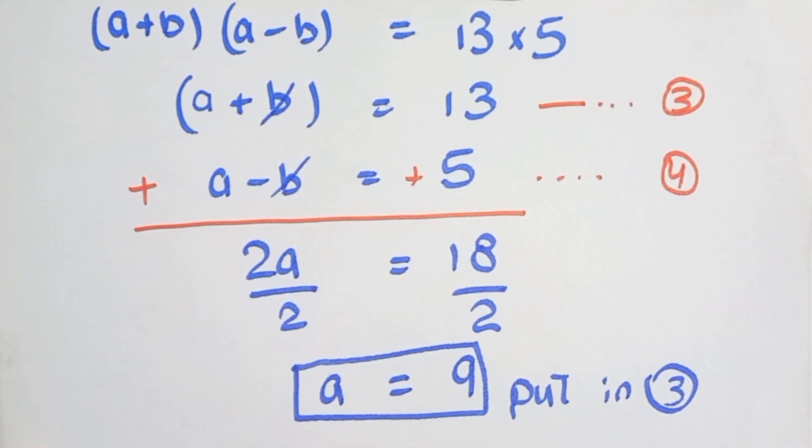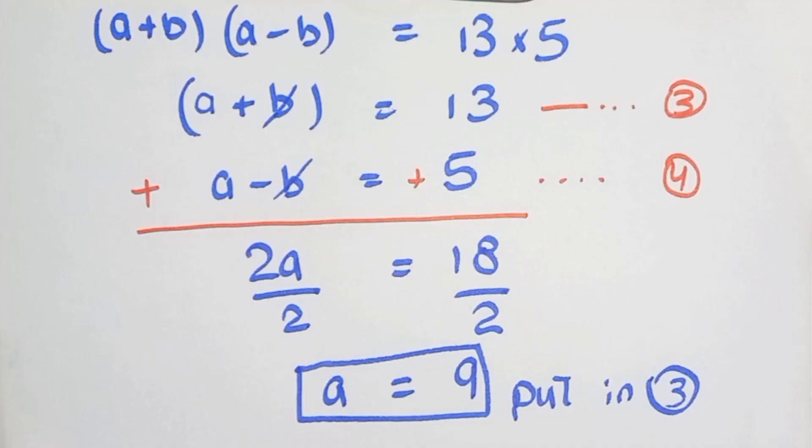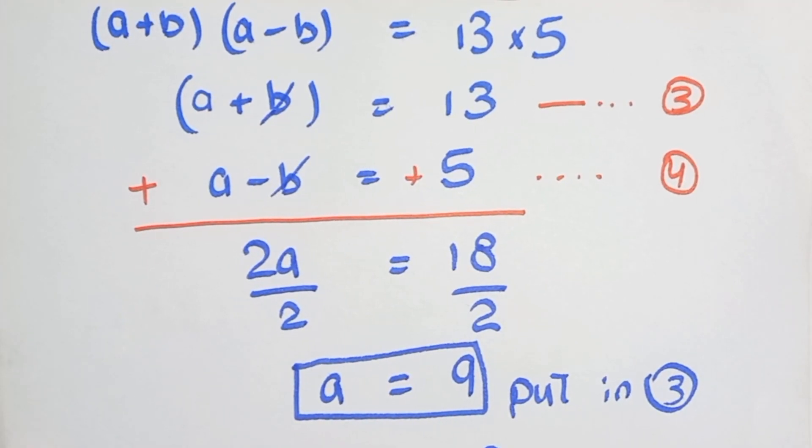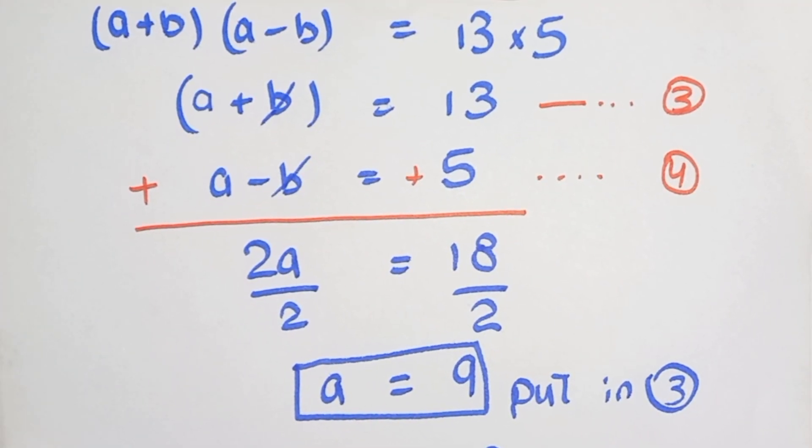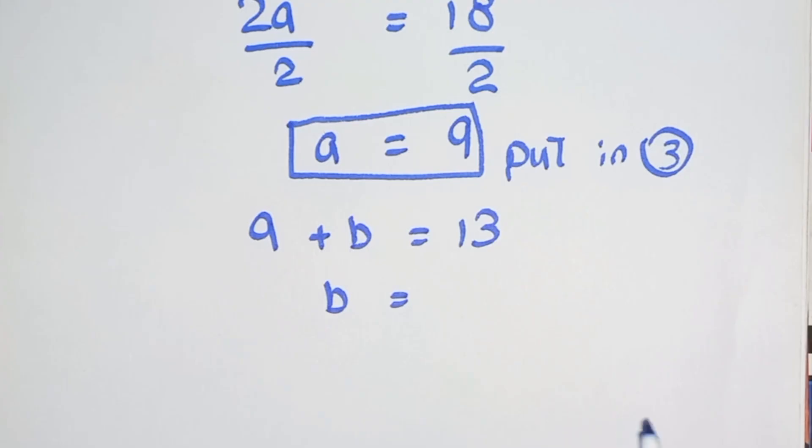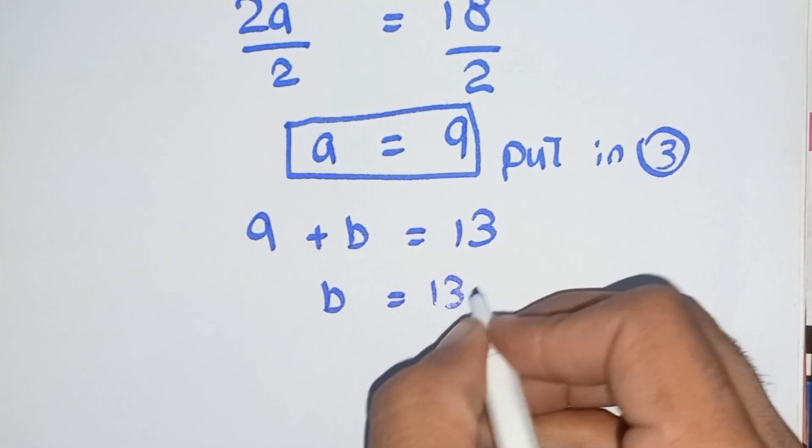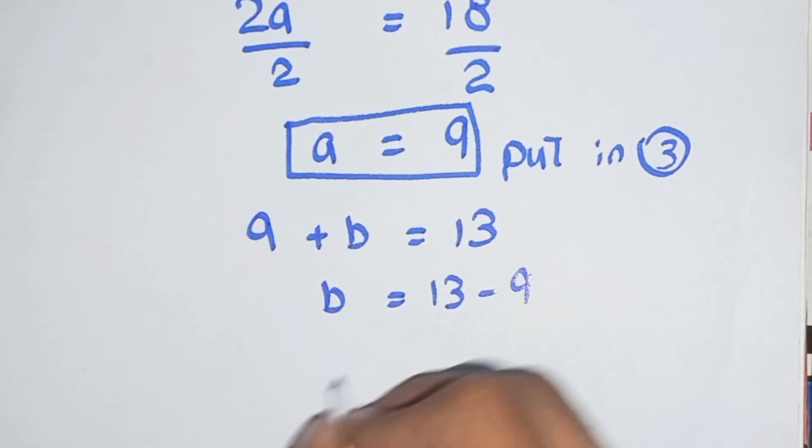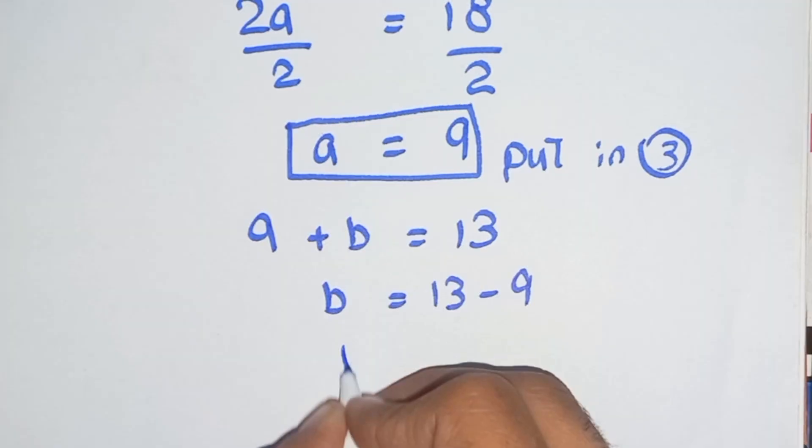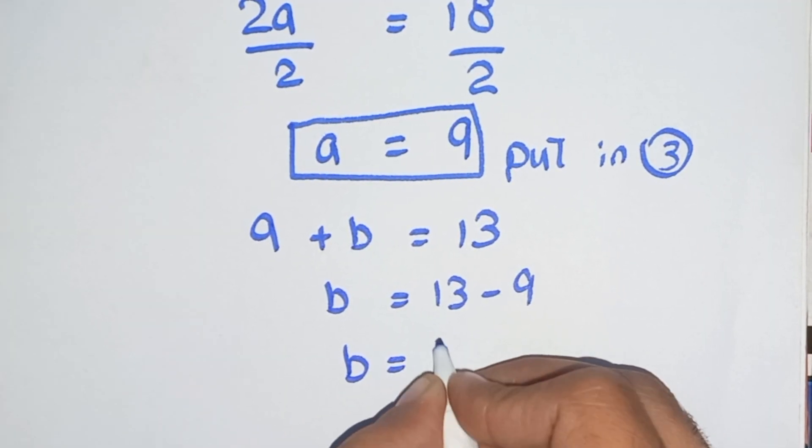So a+b equals 13, so 9+b equals 13. b equals 13 minus 9, b equals 4.